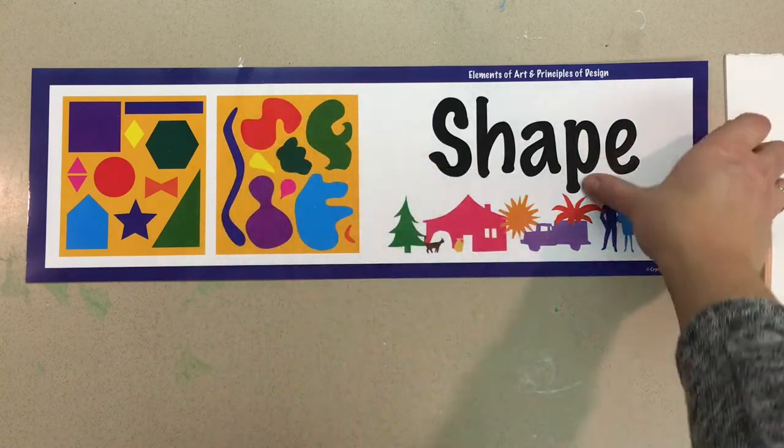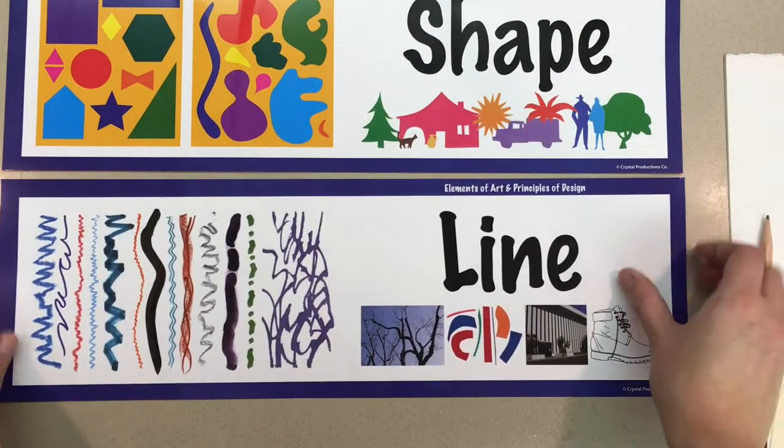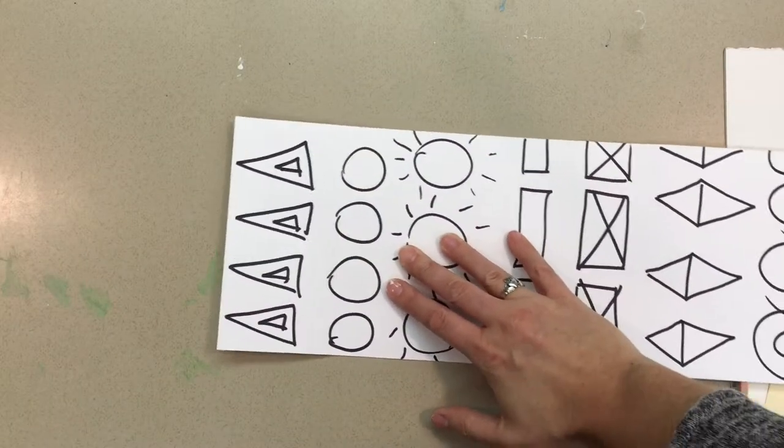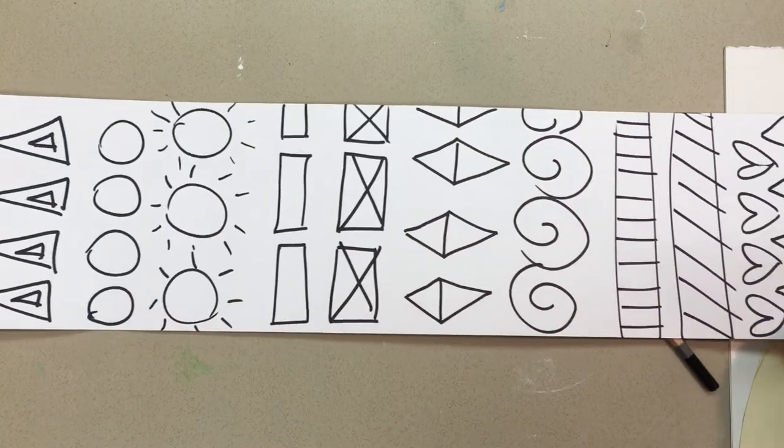For this project you're going to fill your animals with patterns, shapes and lines like circles or squares, triangles, zigzag lines, wavy lines. Here are some examples where I use two shapes or a shape with lines.